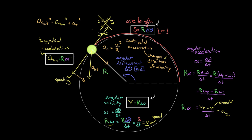To recap: tangential acceleration (r·alpha) either speeds an object up or slows it down; centripetal acceleration changes the direction of motion. Speed relates to angular velocity by v = r·omega, and arc length relates to angular displacement by S = r·Δθ. These three equations relate angular motion variables to their linear counterparts.